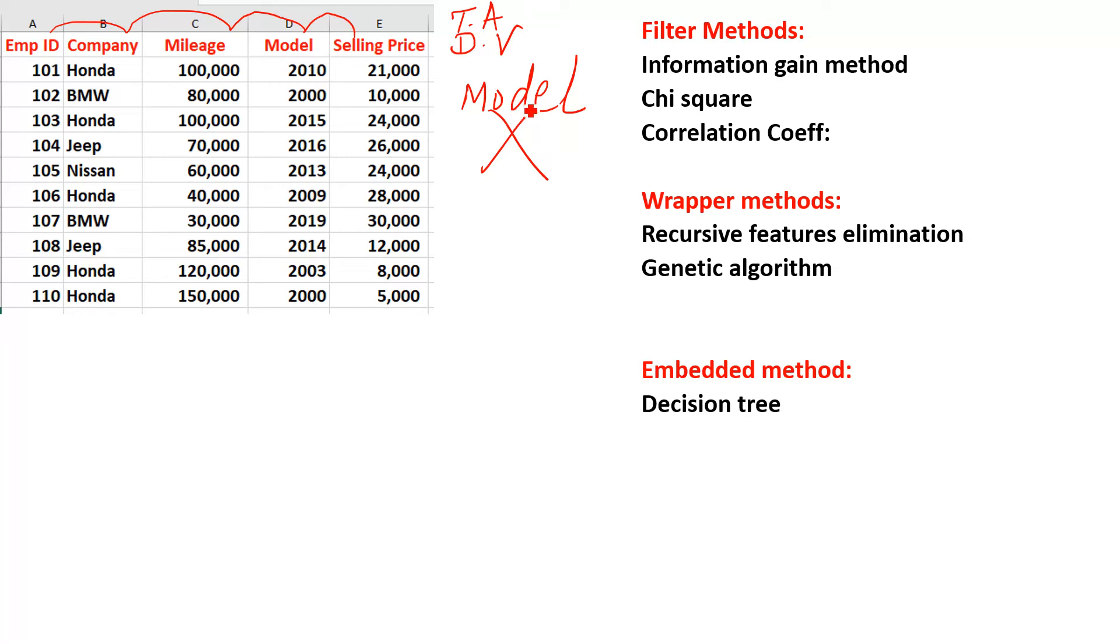Now the question arises: why, if we apply all this data to our training data set, will we not get an accurate model? Because some features do not directly relate to the target variable. Those features are called noise, so we are also giving noise to the training data set.